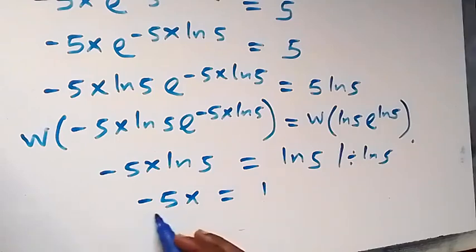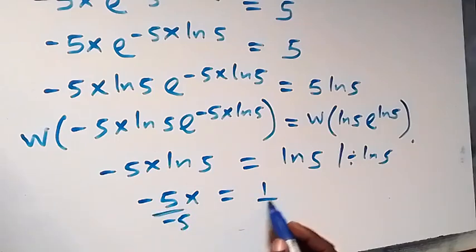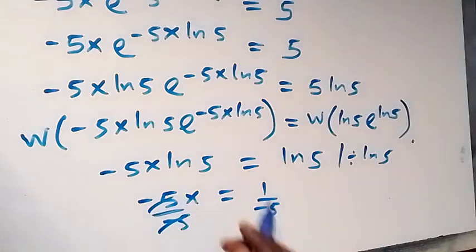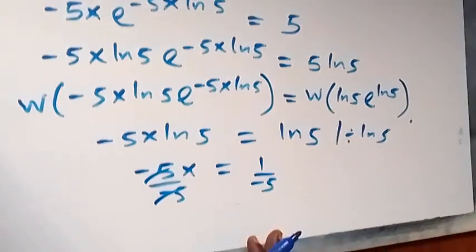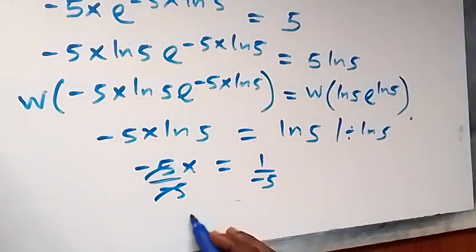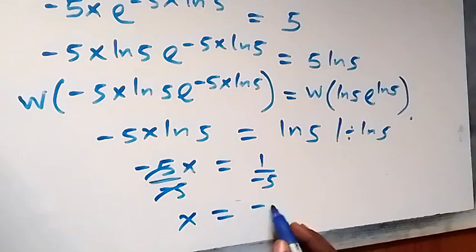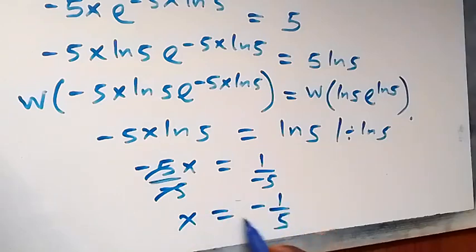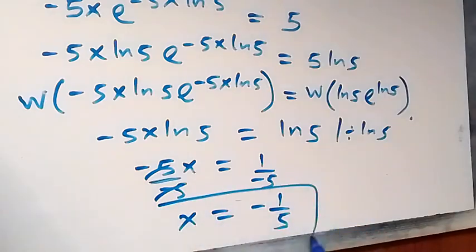So divide both sides by minus 5. This cancels out, and here we have x equals to minus 1 over 5. So we have the other value of x.